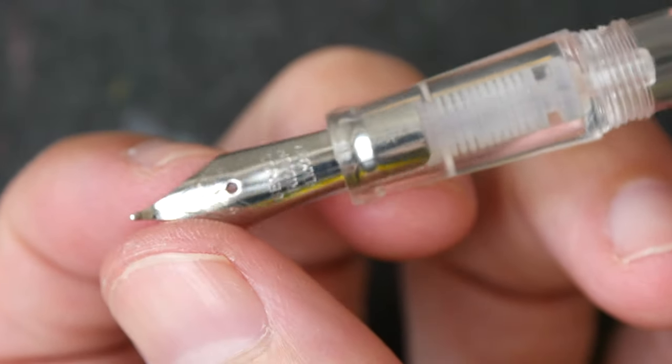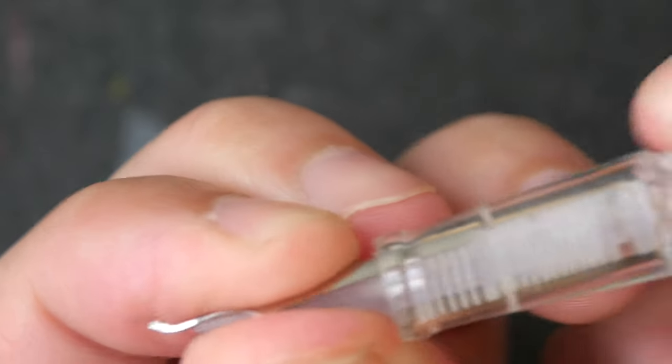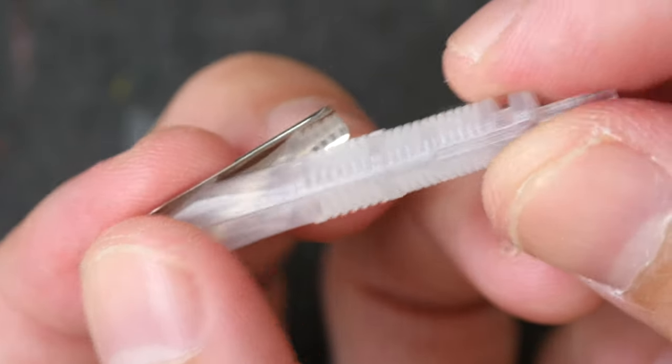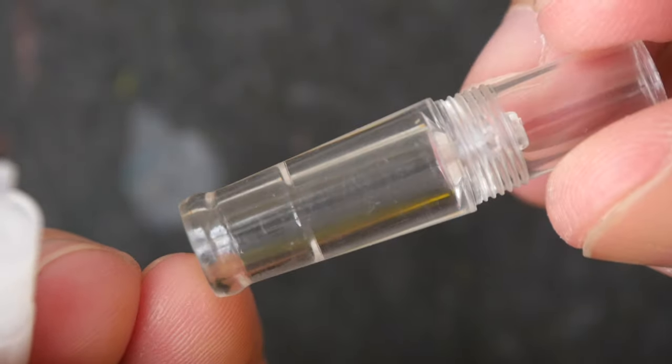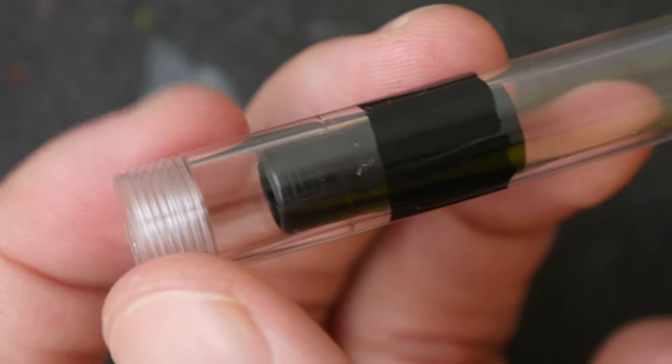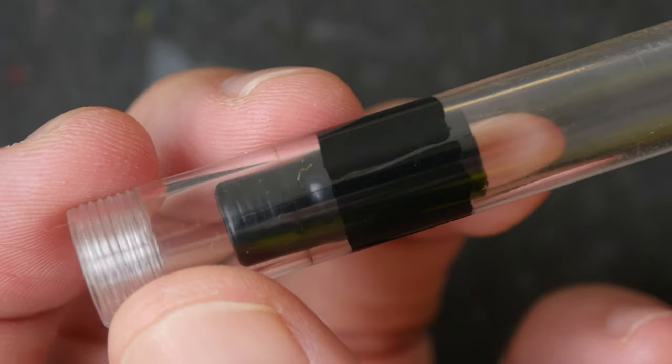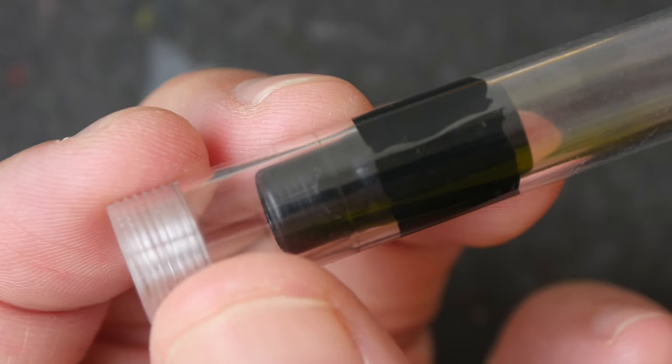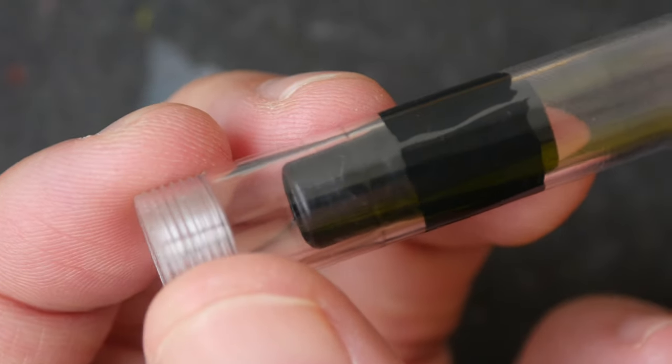This pen can be dismantled very easily for cleaning. You just have to twist the nib and the feed together and pull them out. So that's the plastic feed and this is the grip section. This is the back of the body. This part here looks like some sort of silicone grease that's applied to prevent the ink from flowing out, and this black part here is the stopper.